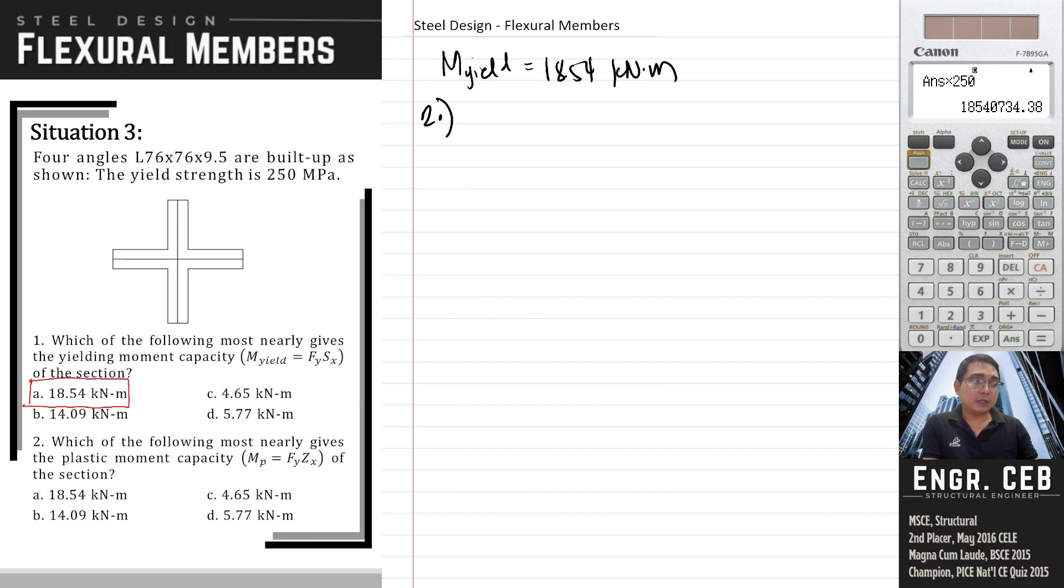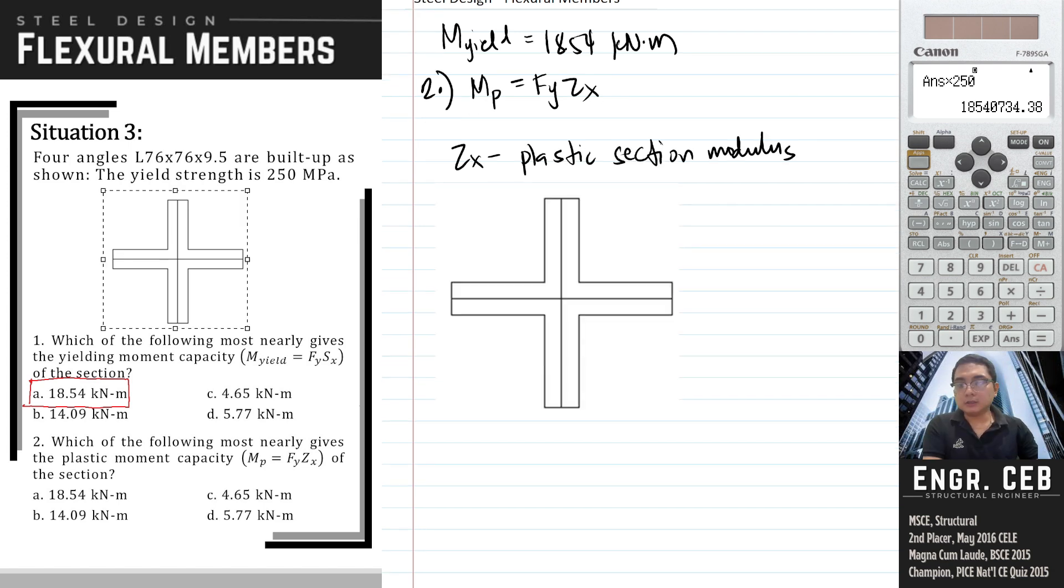Problem 2: Which of the following most nearly gives the plastic moment capacity of the section? So this time, we are asked to solve for the plastic moment capacity, so we need Zx. Zx is the plastic section modulus. In determining the plastic section modulus, we just need to get the moment of the area above the neutral axis towards the neutral axis as well as the bottom.